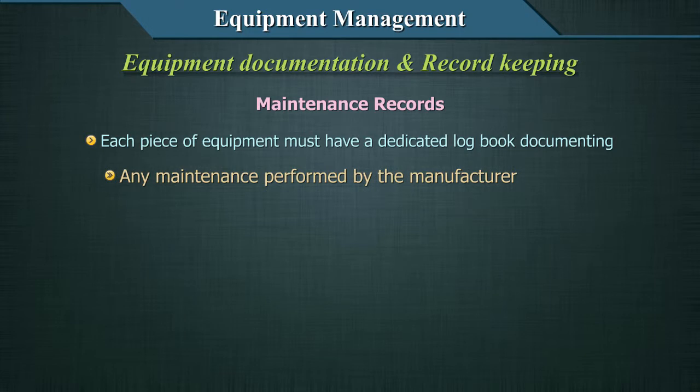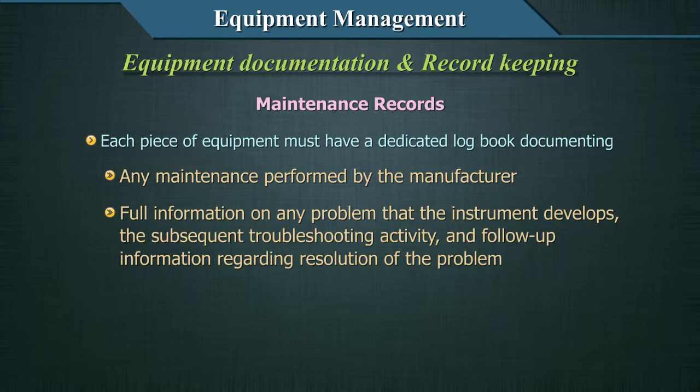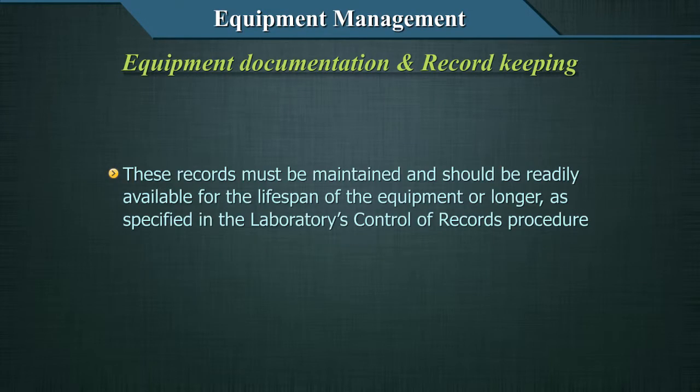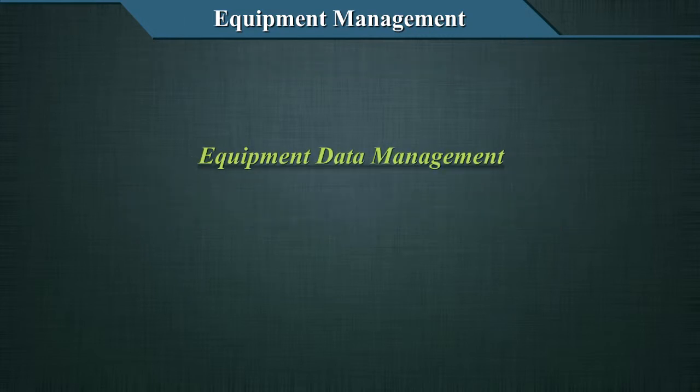Records should also document any maintenance performed by the manufacturer, full information on any problem the instrument develops, subsequent troubleshooting activity, and follow-up information regarding resolution of the problem. These records must be maintained and should be readily available for the lifespan of the equipment or longer, as specified in the laboratory's control of records procedure.